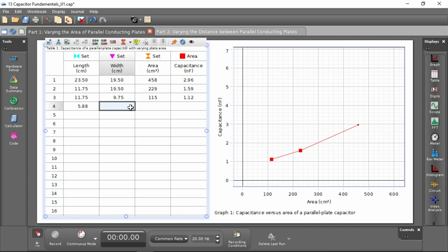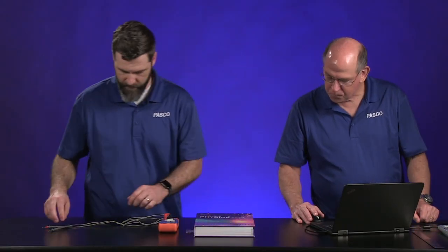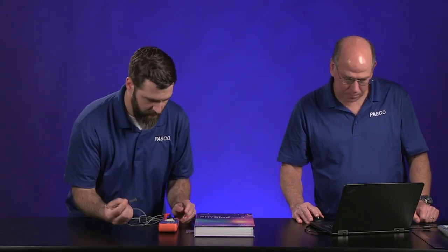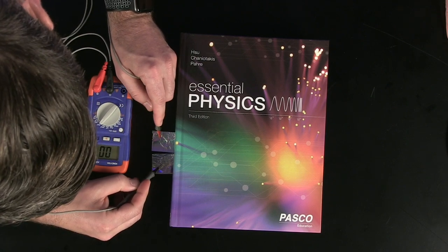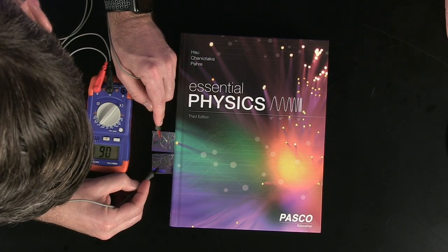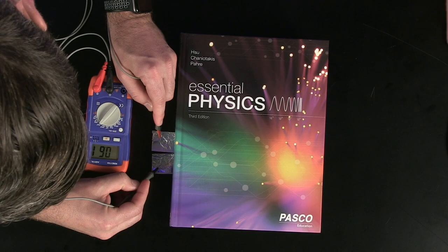All right. The area is going down by a half each time, right? So far. Yep. All right. So now let's see what we're looking at here. 0.61 nanofarads.